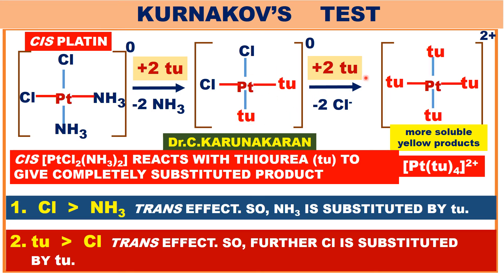In the second step, thiourea has more trans effect than chlorine. Therefore, the group trans to thiourea is substituted by thiourea as well. This results in a completely substituted product — yellow crystals are obtained.